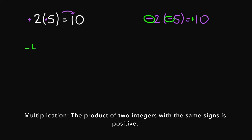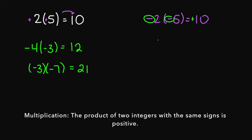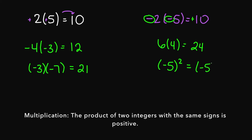Just like negative 4 times negative 3 is going to give you a positive 12. Or negative 3 times negative 7 is going to give you a positive 21. Or 6 times 4 is going to give you a positive 24. What if you had negative 5 squared? This means you have negative 5 times negative 5. I have two integers here with the same sign, so your product is going to be positive. Negative 5 times negative 5 is going to be a positive 25.